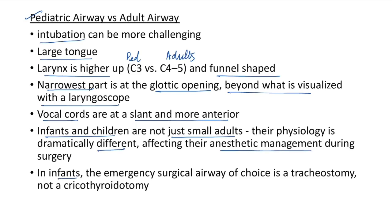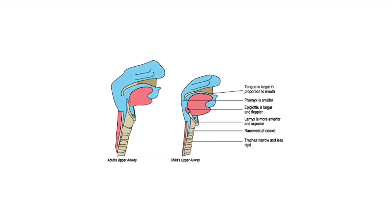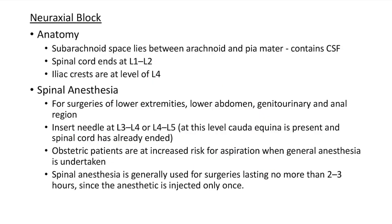In infants, the emergency surgical airway of choice is a tracheostomy and not a cricothyroidotomy. Looking at the diagram comparing pediatric and adult airways: in children, the tongue is larger in proportion to the mouth, the pharynx is smaller, the epiglottis is larger and floppier, the larynx is more anterior and superior, the narrowest part is at the cricoid and cannot be visualized with a laryngoscope, and the trachea is narrow and less rigid.